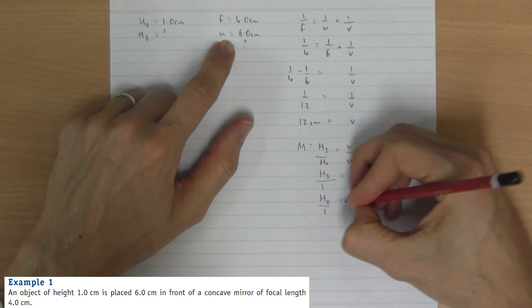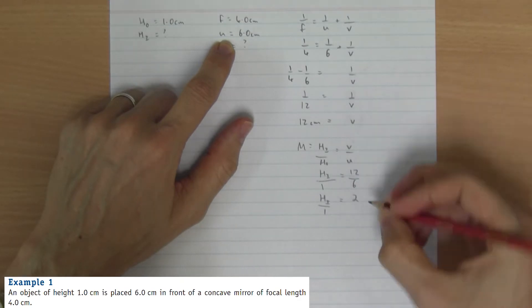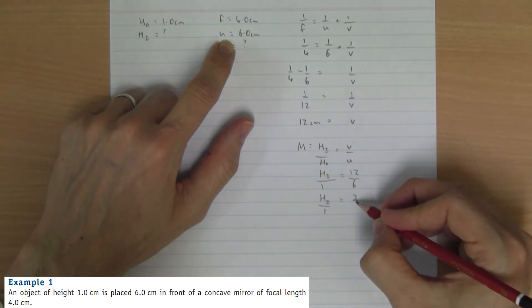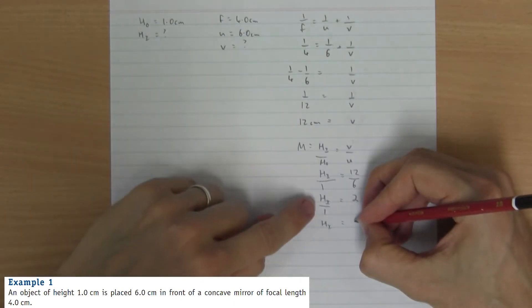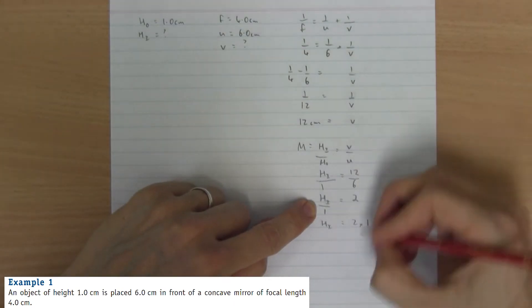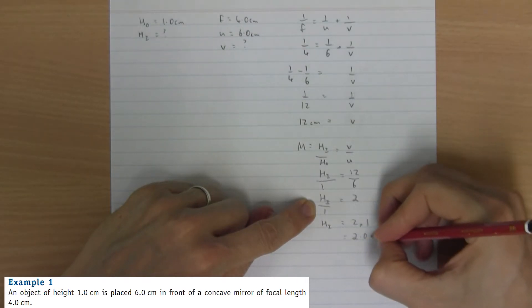Let's write that separately just so you know. Some questions ask for the magnification. And therefore, the height of the image is two times one cross multiply, which is two centimeters.